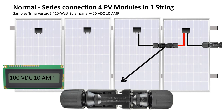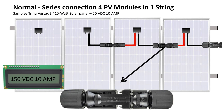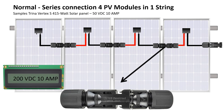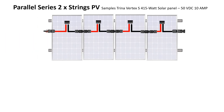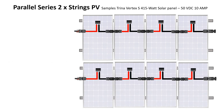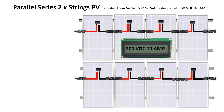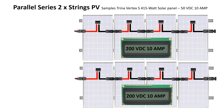As soon as you connect the next panel it becomes 100 volts but stays at 10 amps. Add the next panel and it becomes 150 volts DC at 10 amps. Keep connecting to the end of the string and you get 200 volts DC at 10 amps. For a parallel setup, you put a second string of the same panels alongside the first — each string giving you 200 volts DC at 10 amps.